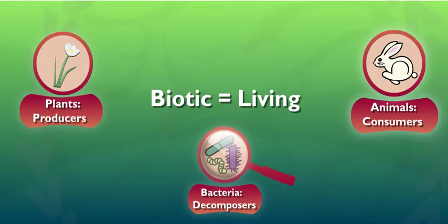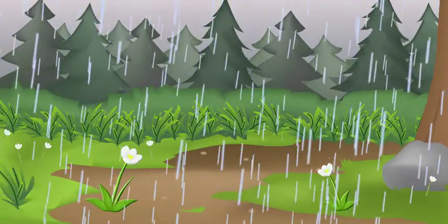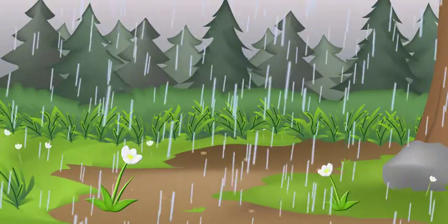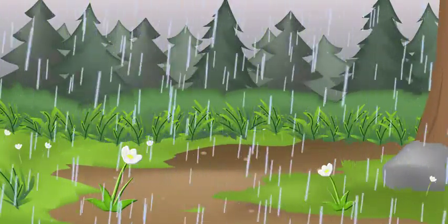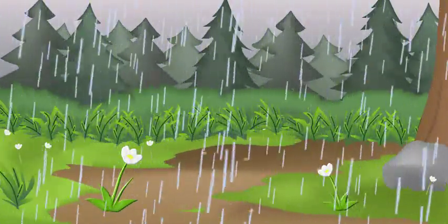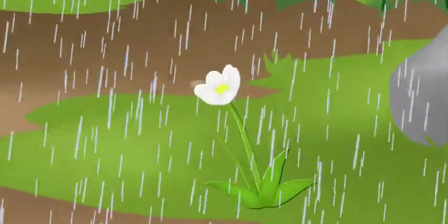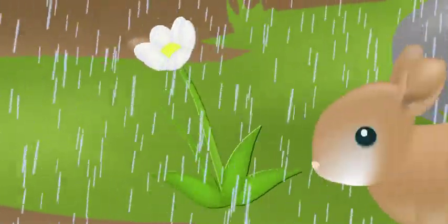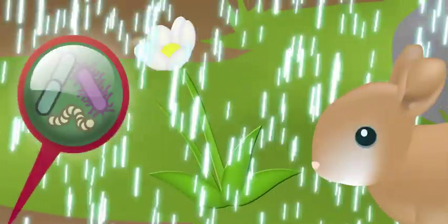Together, they make up the community living in the ecosystem. There's a lot going on in this ecosystem — plants, animals, weather, bacteria. They each play a different role in helping the ecosystem.